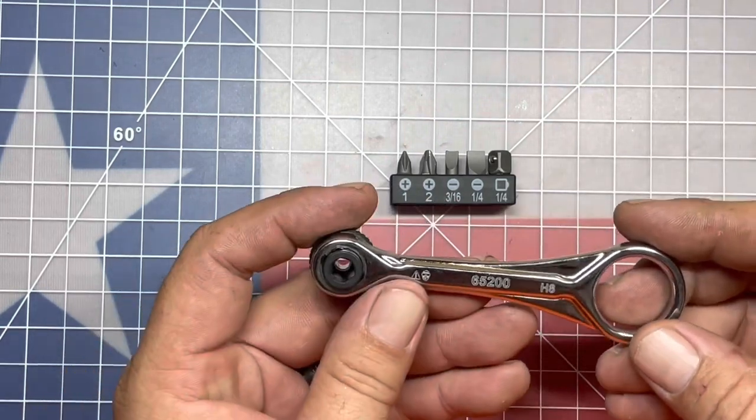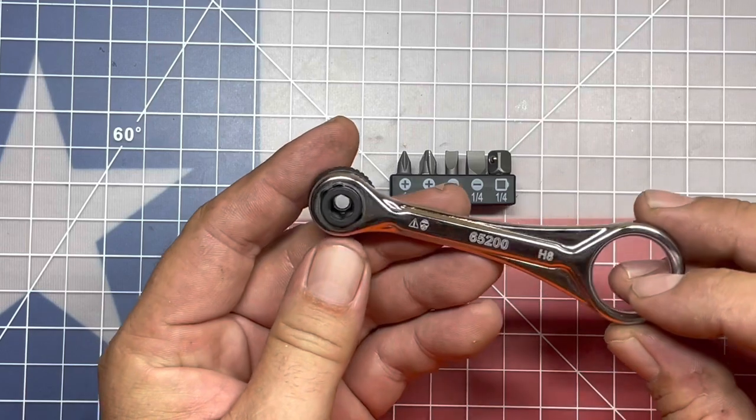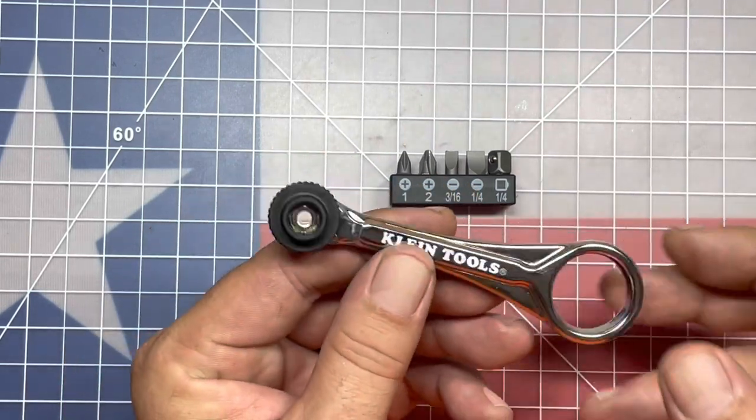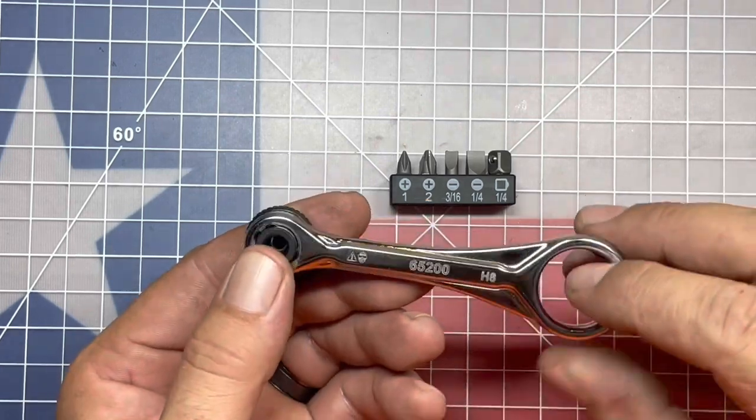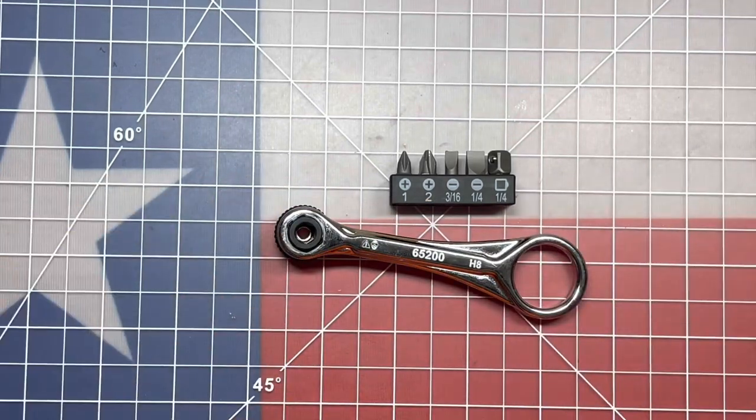So this is the Klein Slim Profile Mini Ratchet, part number 65200. I really like this one. Links will be in the description below. I think you guys are going to like this little ratchet quite a little bit.